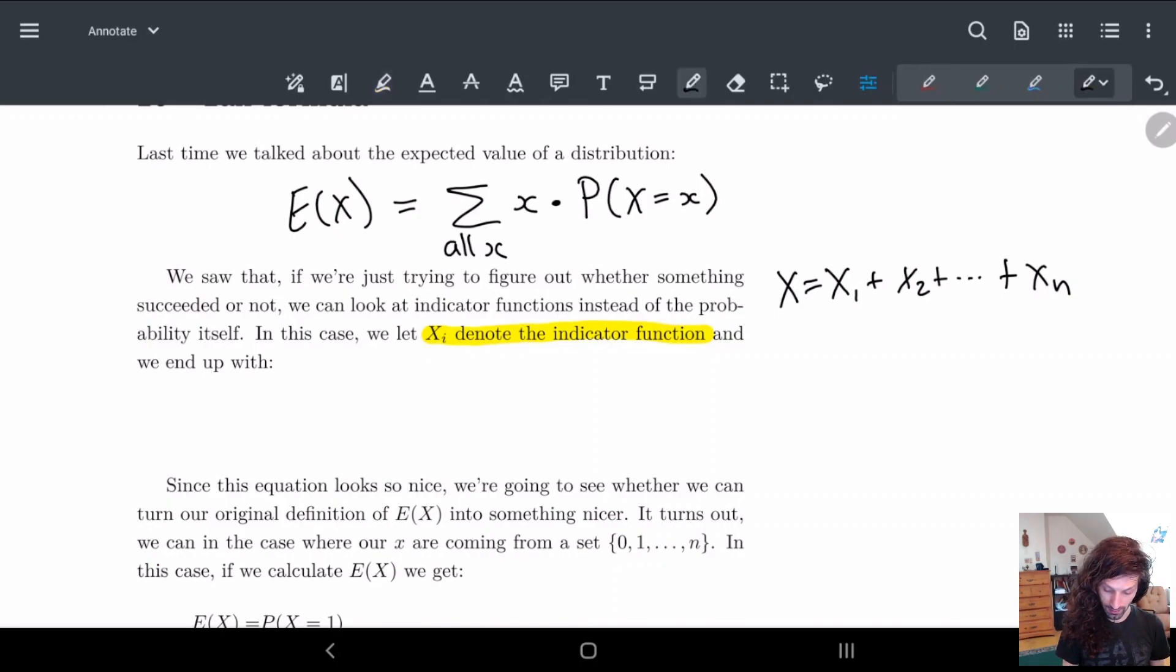In that case, remember we set this equal to X_i, or this little x becomes nothing, it becomes one. So we end up getting E(X) is equal to...